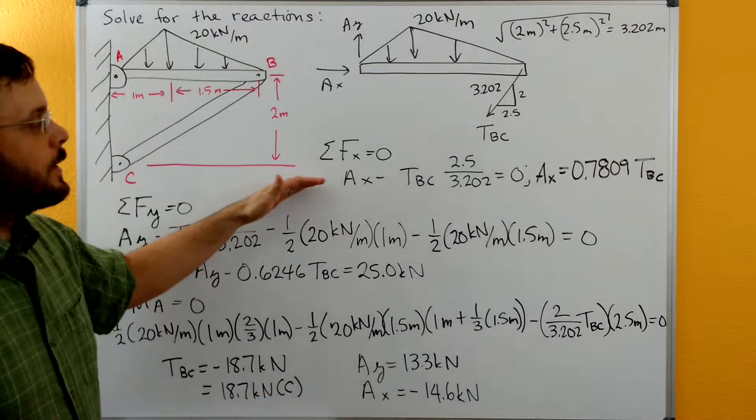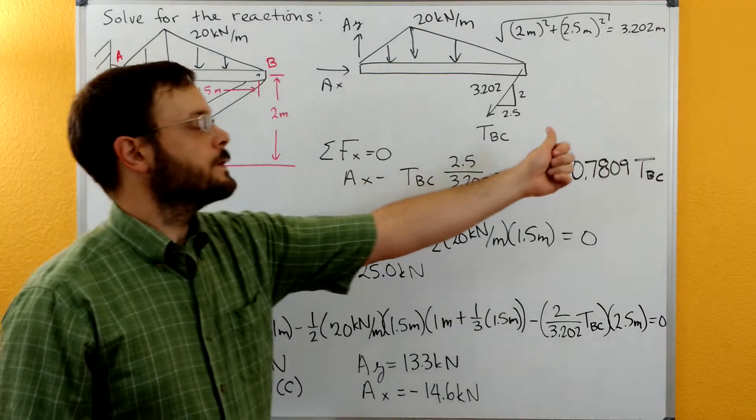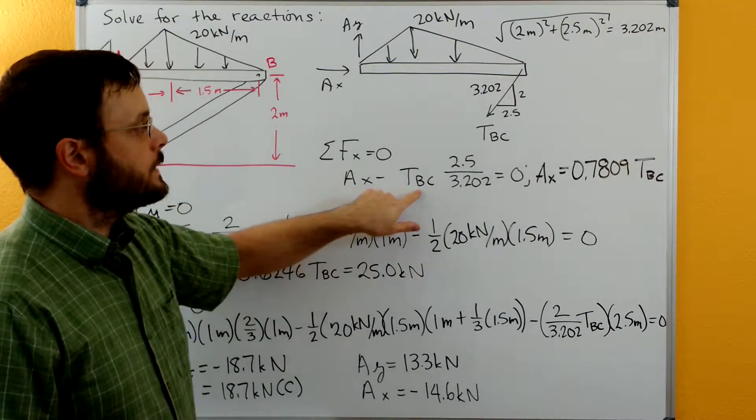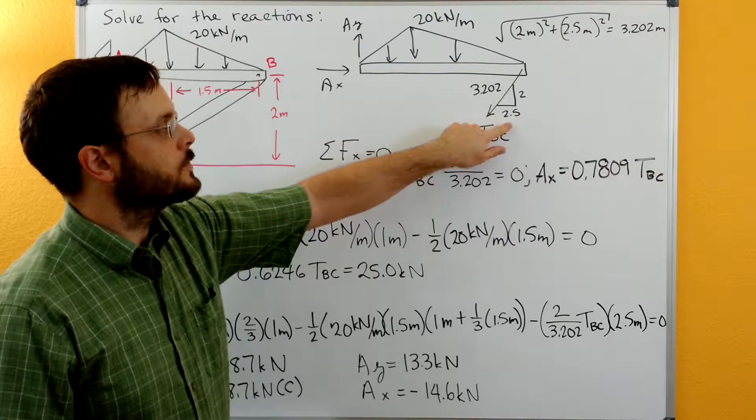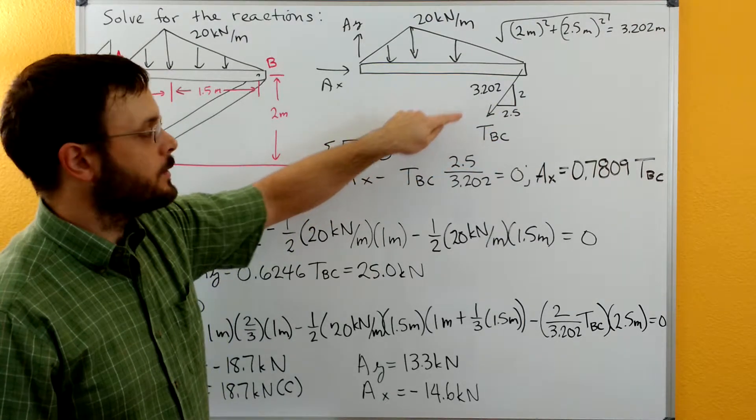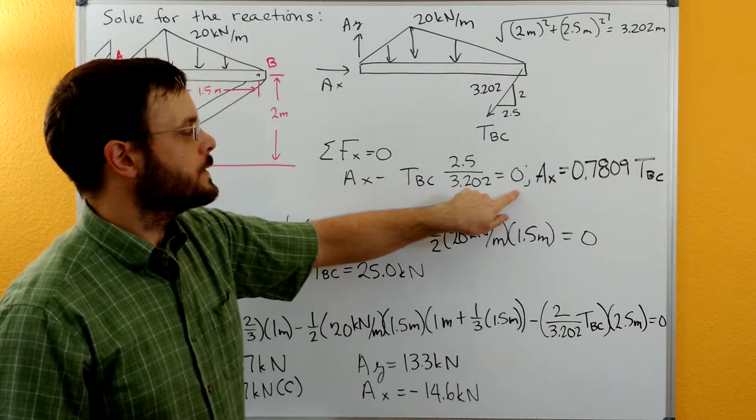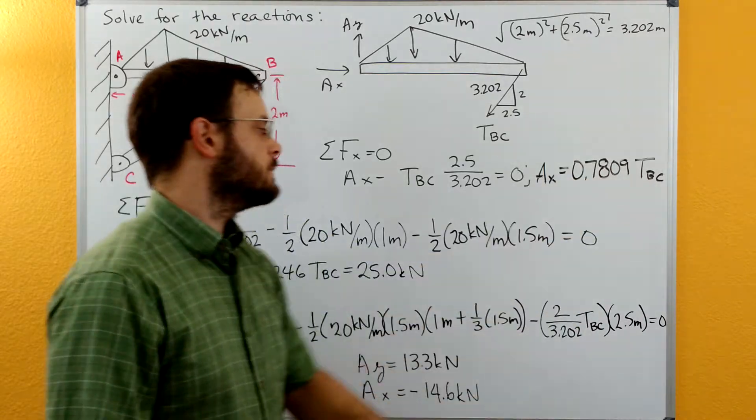So let's do our sum of forces in the X direction. We have AX minus, because the X component of TBC is going in this negative X direction, TBC times the X component here of the triangle divided by the hypotenuse here of the triangle. So 2.5 divided by the 3.202 is equal to 0, so AX is 0.7809 times TBC.